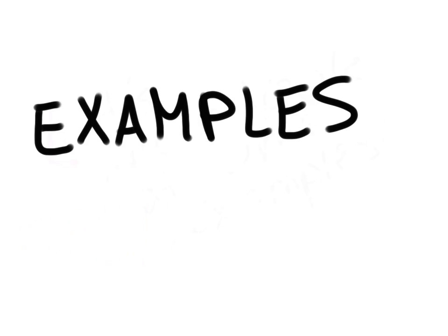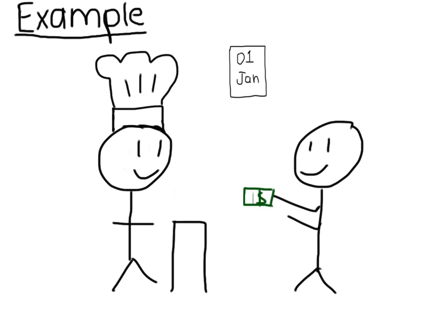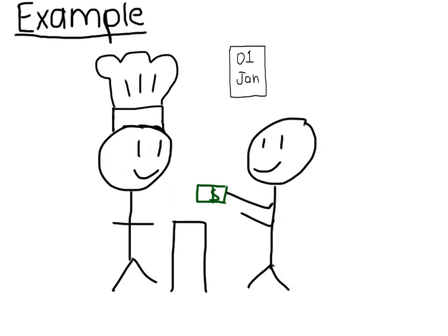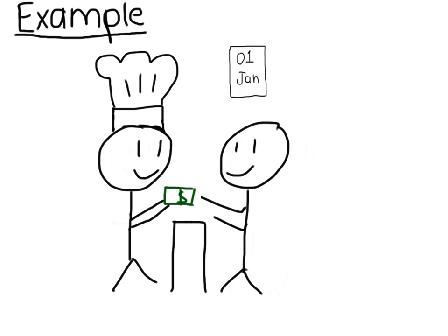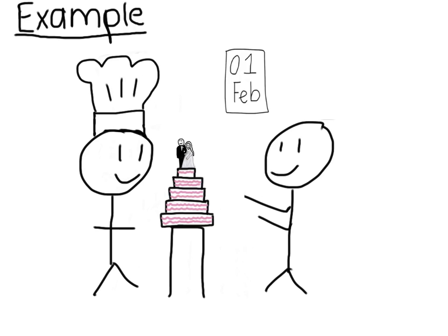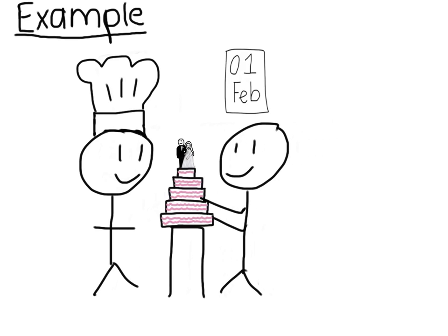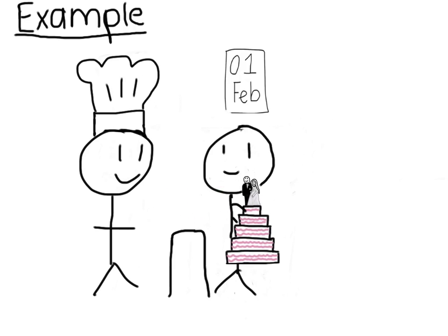Let's look at some examples, assuming the accounting period ends each month. Example 1: on the 1st of January, a person goes to your bakery and orders a cake for next month and they give you cash for it. On the 1st of February, they come and collect the cake that they have already paid for.